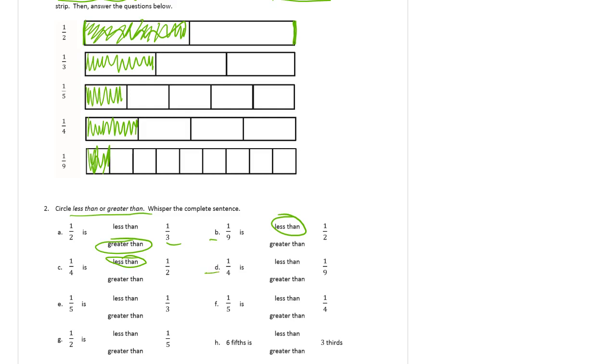For D, we're comparing one fourth and one ninth. You can tell they're right next to each other. It's bigger, maybe more than twice as big. One fourth is greater than one ninth. For E, we're looking at one-fifth and one-third. You can see that one-fifth is less than one-third.